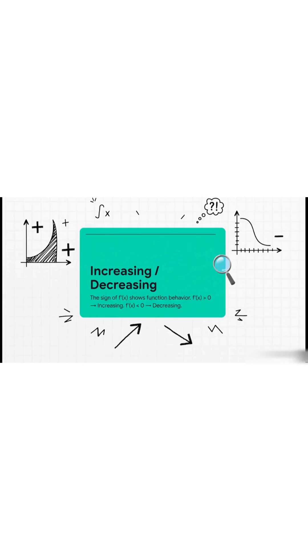Okay, first up, how can you tell if a function is going up or down? It's all about the sign of the derivative, f prime of x. If f prime is positive, the function's increasing. If it's negative, it's decreasing. Seriously, it's that simple.